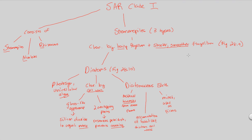In the next video, we'll be covering golden algae and brown algae, which are the other two subtypes of stramenopiles. To reiterate: diatoms are a stramenopile; stramenopiles are part of the SAR clade; the SAR clade is a type of protist; and protists are a type of eukaryote.